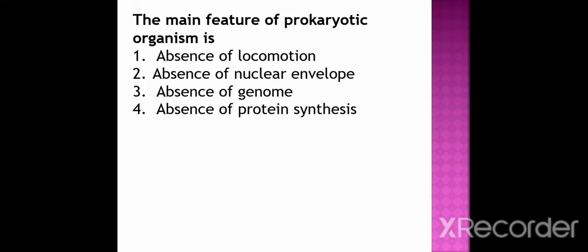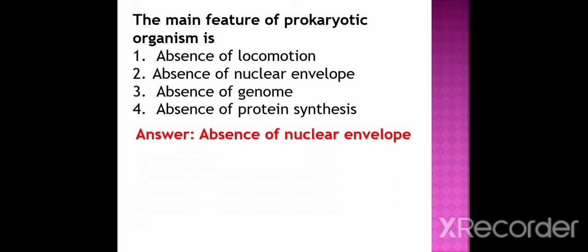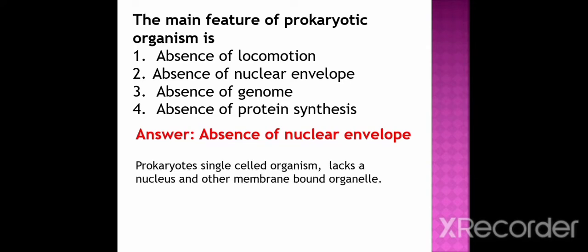Next question: the main feature of prokaryotic microorganisms is — absence of locomotion, absence of nuclear envelope, absence of genome, or absence of protein synthesis. The correct option is absence of nuclear envelope. Basically, prokaryotes are single-celled organisms; they lack a nucleus and other membrane-bound organelles such as mitochondria, Golgi apparatus, etc.